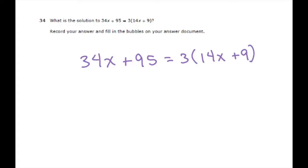The first thing we want to do is distribute here. 3 times 14 is 42 plus 27. And then we have our 34x plus 95.